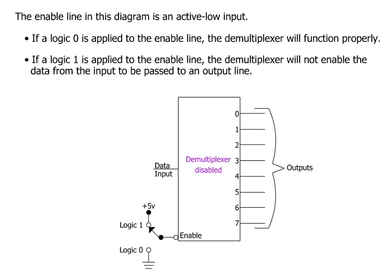However, if a logic 1 is applied to the enable line, then the demultiplexer becomes disabled, and data from the input will not be passed to any of the output lines.